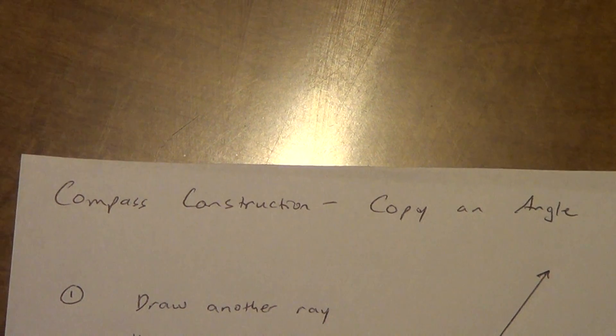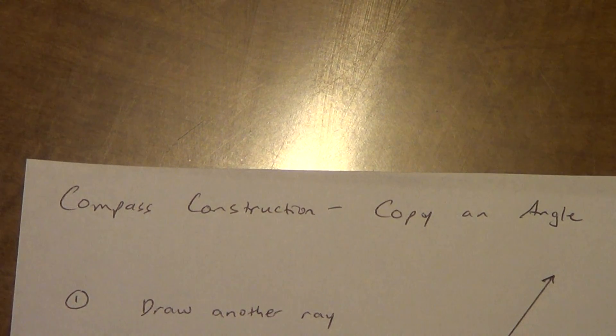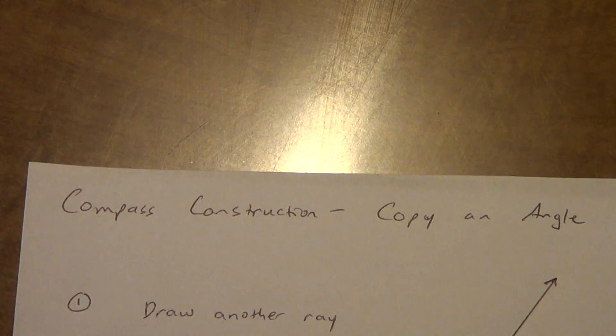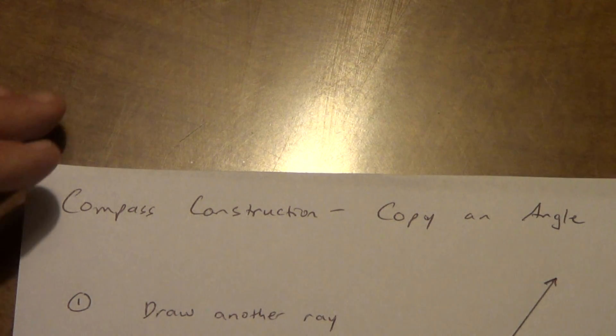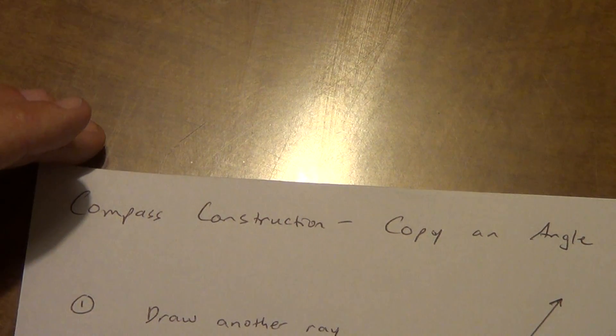Alright, compass construction number three. This is probably the hardest one, partly because it has the most steps. This one's going to have six steps, whereas all the other ones basically had four steps. So, longest one, usually the hardest one, but let's take a look at it.